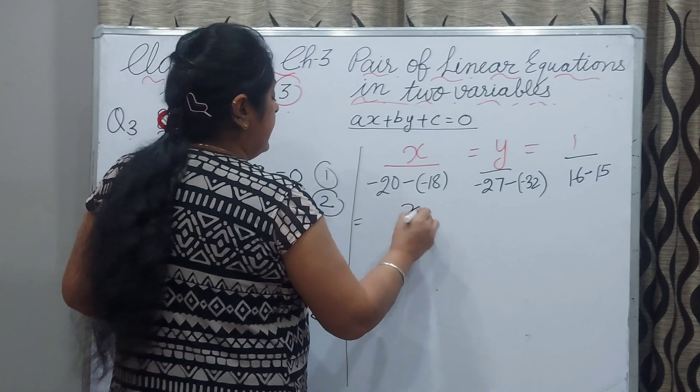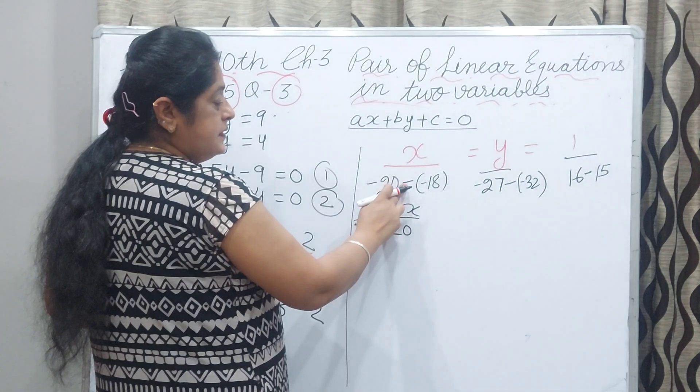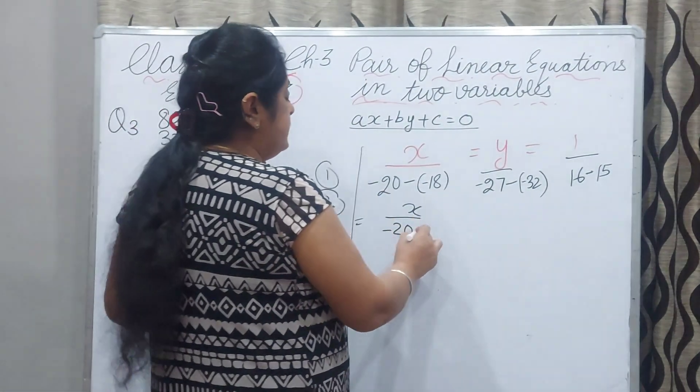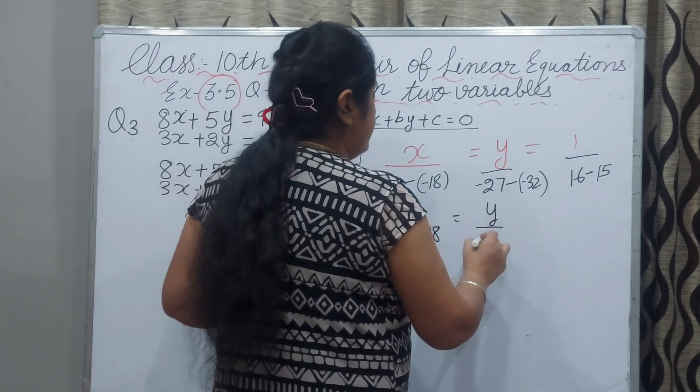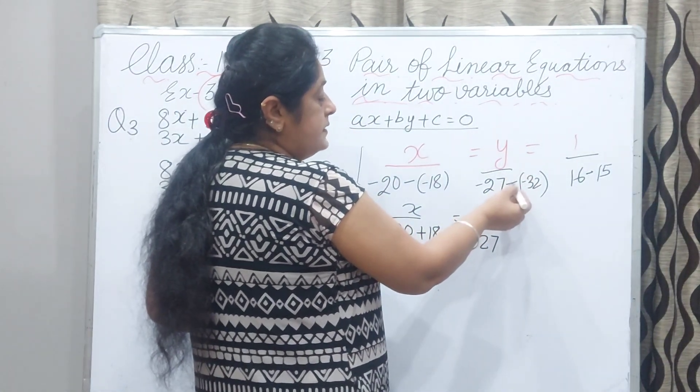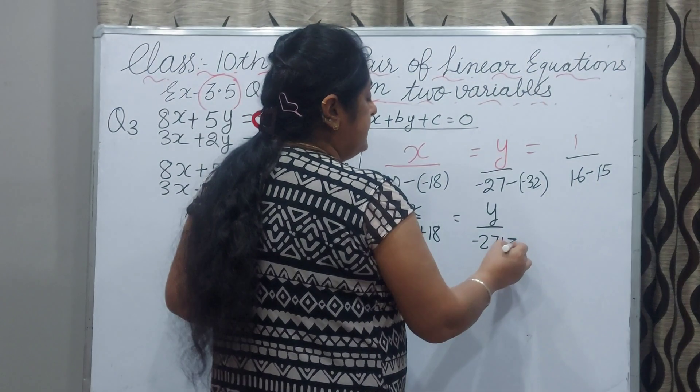Now x equals minus 20. Outside the bracket minus is there. Internal sign will be changed. It will be plus 18. For value of y, minus 27, same. Outside the bracket minus sign is there and internal minus, it will change to plus, plus 32.